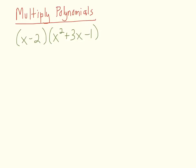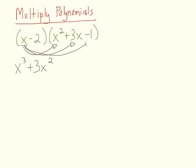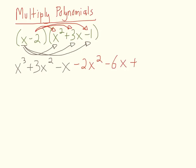So we simply just distribute. First, distribute the x term to each term on the right. x times x squared gives us x to the third. x times 3x gives us 3x squared. And x times negative 1 gives us negative x. Now distribute the negative 2. Negative 2 times x squared gives us negative 2x squared. Negative 2 times 3x gives us minus 6x. And negative 2 times negative 1 gives us 2.